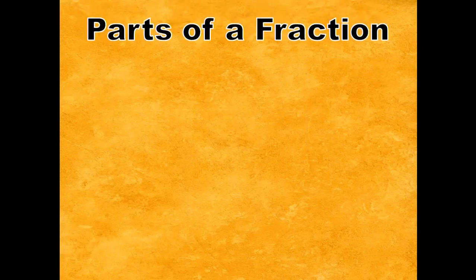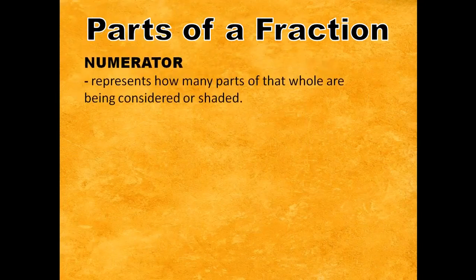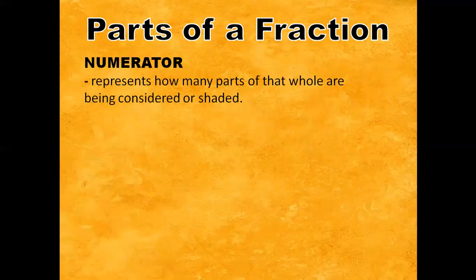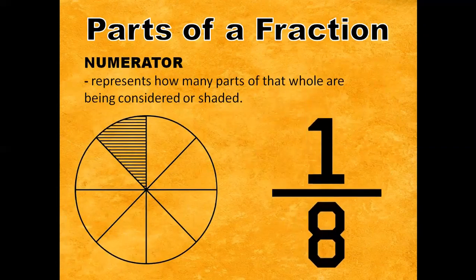What are the parts of a fraction? First, we have the numerator. The numerator represents how many parts of that whole are being considered or shaded. For example, we have one-eighth, so it means that only one part of the whole is considered or shaded. So we have one as the numerator.